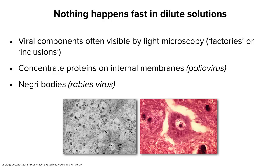Another example is a neuron from an animal with rabies after rabies virus infection. You can see a darkly staining inclusion body in the cell — called Negri bodies, named after the pathologist who discovered them. We now know this is where the nucleocapsid of rabies virus assembles, very much like vesicular stomatitis virus. It will then be transported to the plasma membrane by motor microtubule cytoskeleton to mature there. Concentration increases the efficiency of protein-protein and protein-RNA interactions.